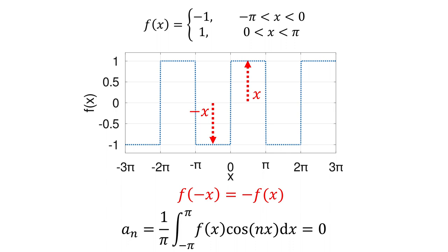In fact, the meaning of an is how much even function component is in the periodic function fx, since an is related to cosine nx. But given square wave function is odd function, an must be 0.